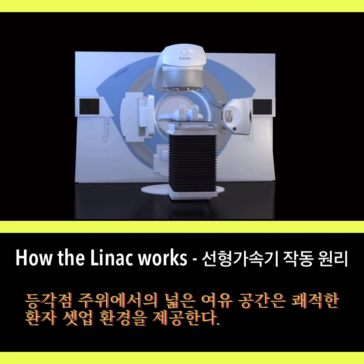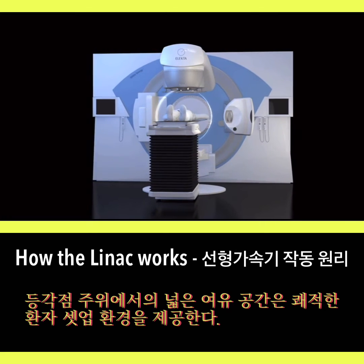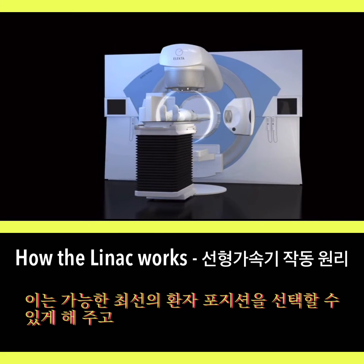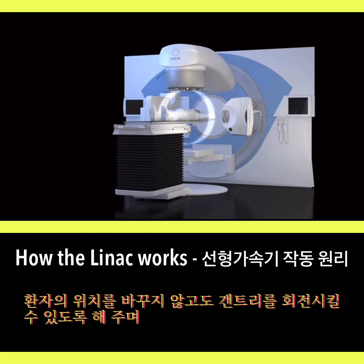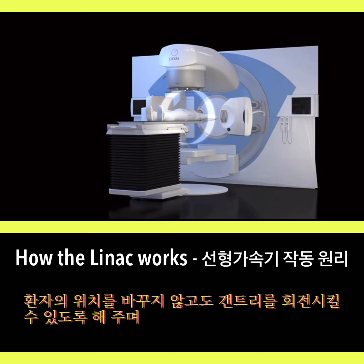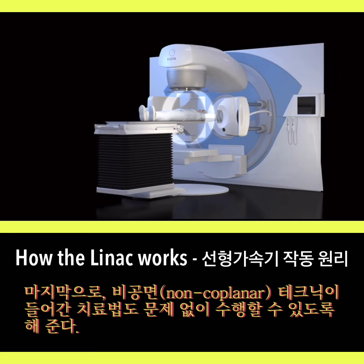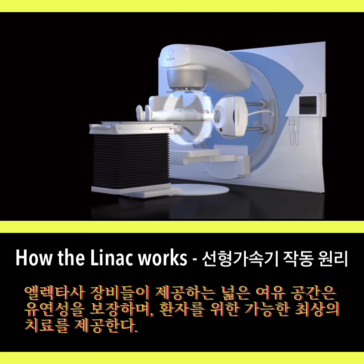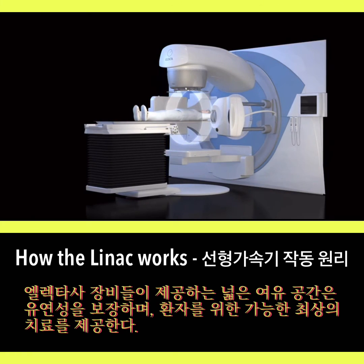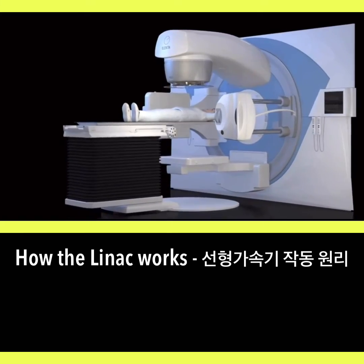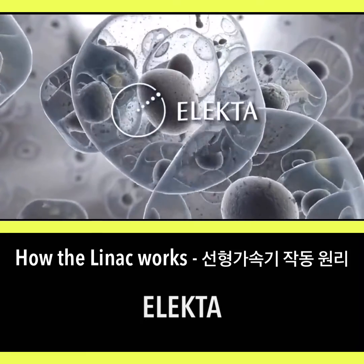A wide clearance around the isocenter means improved access for patient setup, freedom to use the best possible patient positioning and immobilization accessories, and freedom to rotate the gantry between fields without needing to move the patient. It also means that treatment techniques using non-coplanar beams are not compromised. The large clearance offered by Elekta machines ensures flexibility in providing the best possible treatment for the patient.